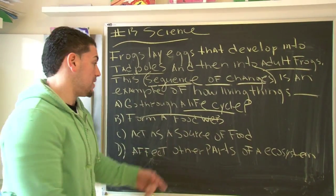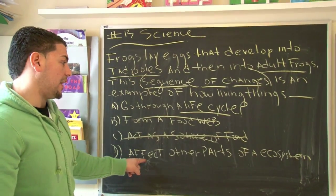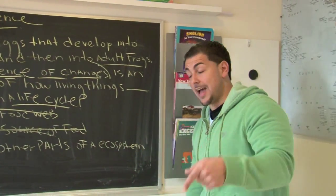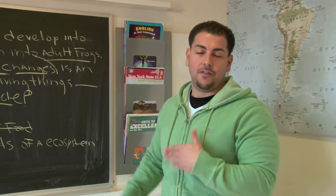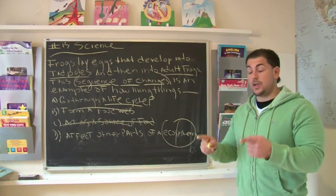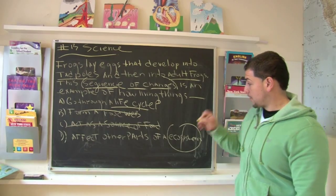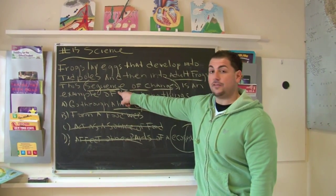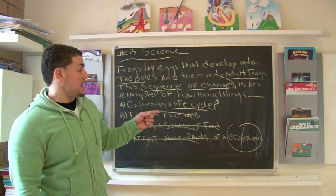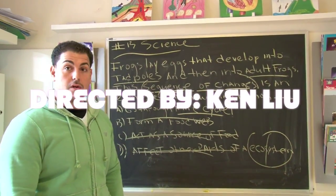'Act as a source of food' — once again, food, food, can't mesh, no good. And finally, 'affect other parts of the ecosystem.' Well, they're talking about frogs and how they start off as tadpoles, but they're not saying how they affect the ecosystem. Remember, 'eco' has to do with the earth system, life changes in the system. So what we're talking about here is a question where we're looking at the sequence of changes, tadpole all the way to a frog, and the best answer is 'go through a life cycle.' Very good.